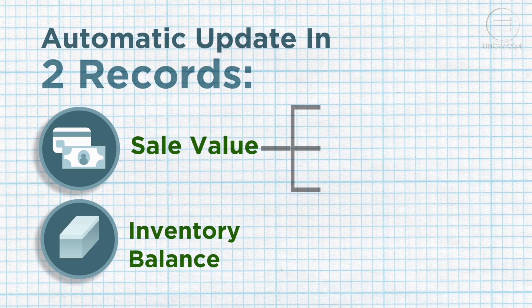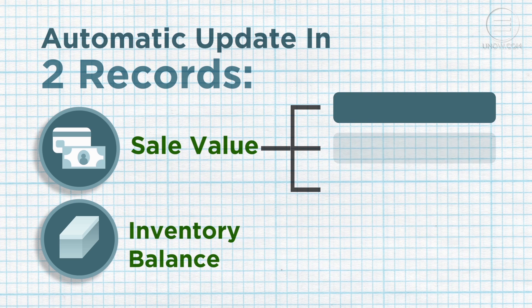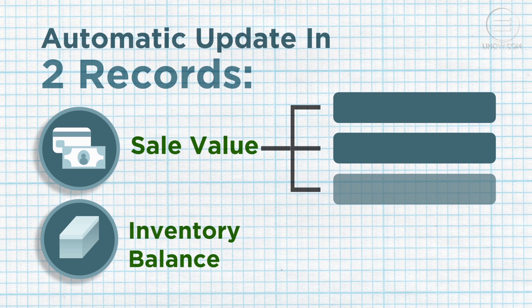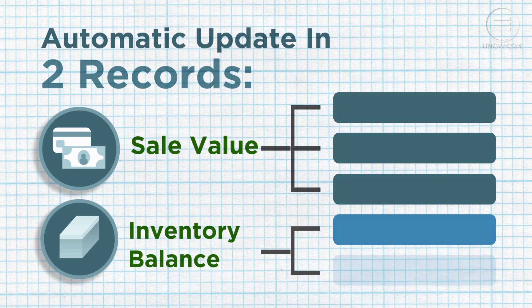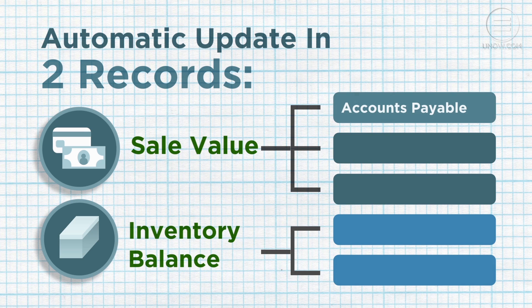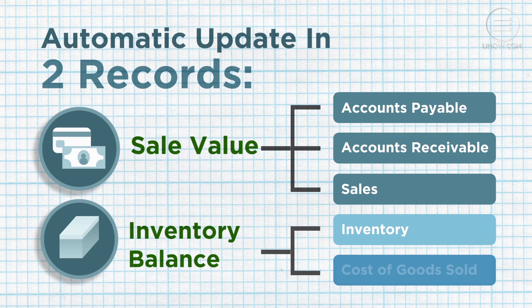Sales transactions are recorded using specific accounts in the journal and general ledger. These include accounts payable, accounts receivable, sales, inventory, and cost of goods sold.